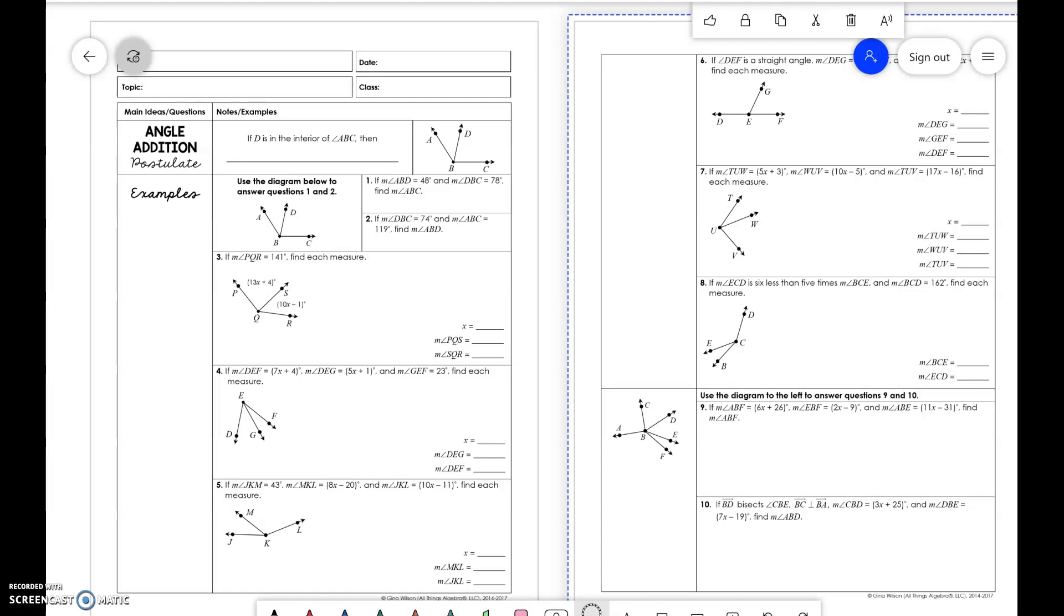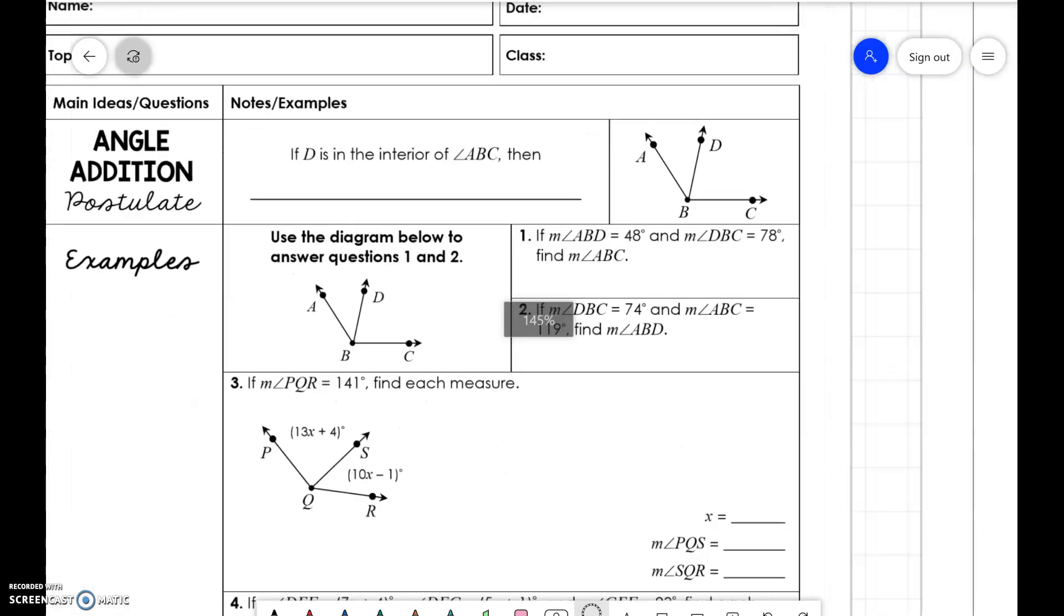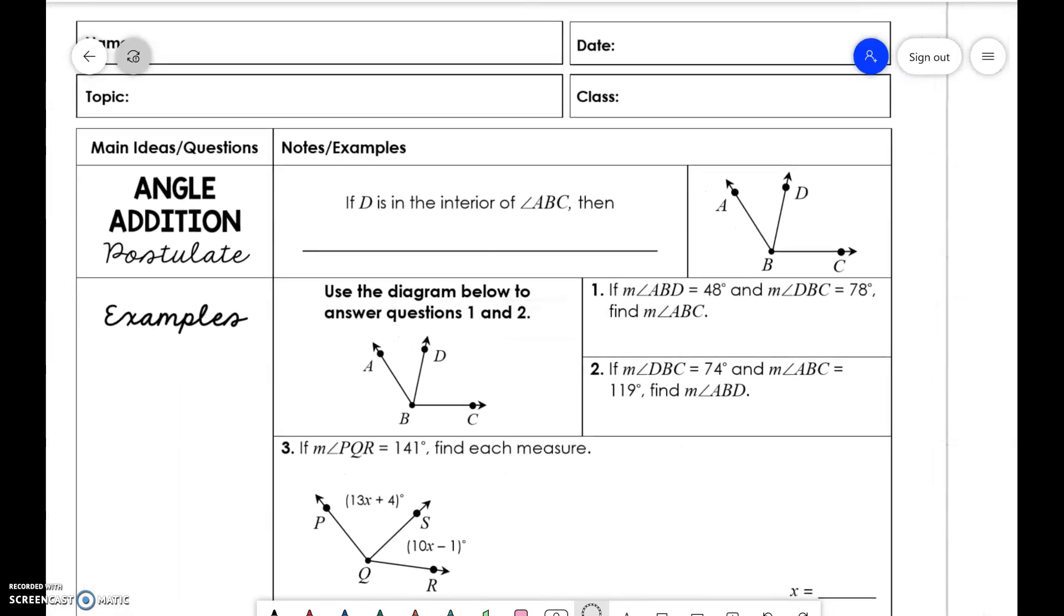All right. Hey, everybody. I'm going to do notes on angle addition postulate. So here we go. Angle addition postulate is very similar to segment addition postulate, where we have three collinear points. A part plus a part is equal to the whole thing.